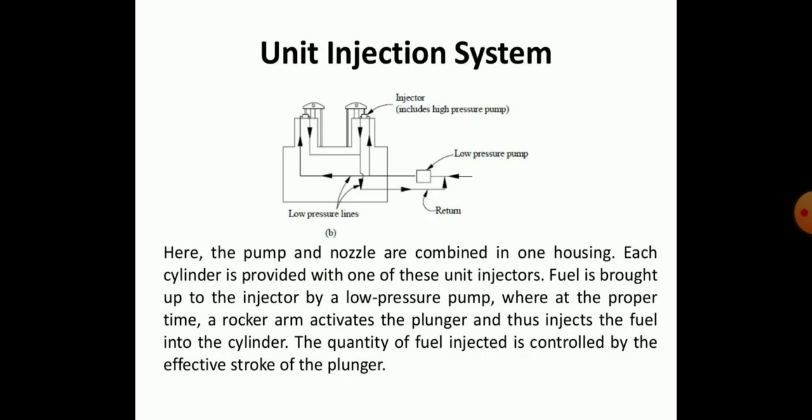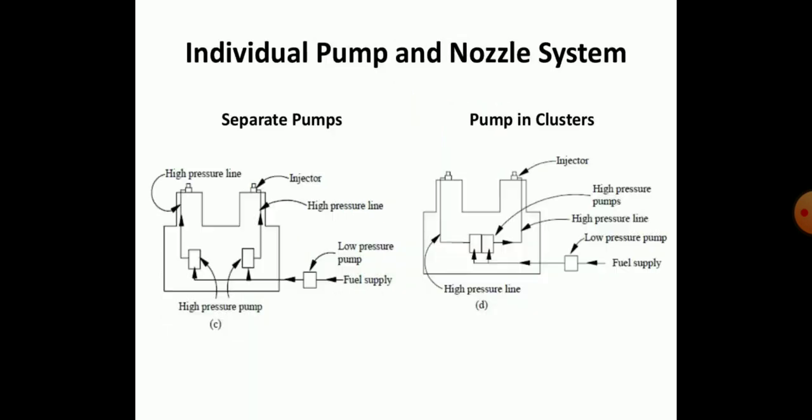In the unit injection system, the pump and nozzle are combined into one housing and each cylinder is provided with one of these injectors. The fuel is brought to the injector by a low pressure pump, and at the proper time the rocker arm activates the plunger, thus injecting the fuel into the cylinder. The quantity of fuel injected is controlled by the effective stroke of the plunger.